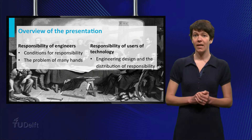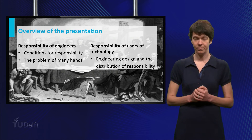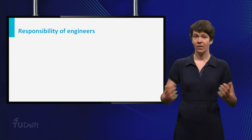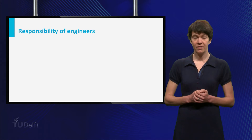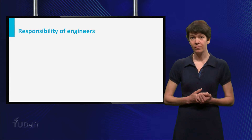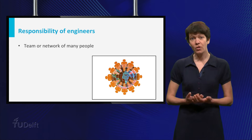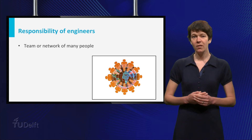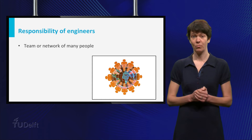The third topic relates to how engineering design may affect the responsibility of users of technology. Let me start with the responsibility of engineers. Engineering often takes place in teams or networks of many people, and before we can discuss the responsibility of those groups, we first have to look a little deeper into what we mean when we say that an individual person is responsible.